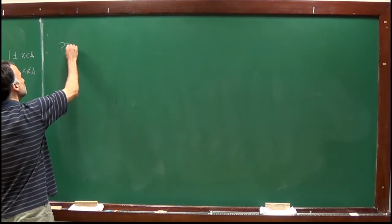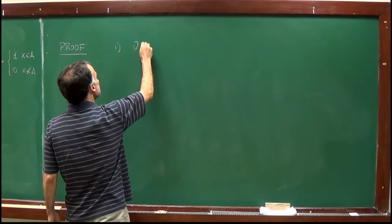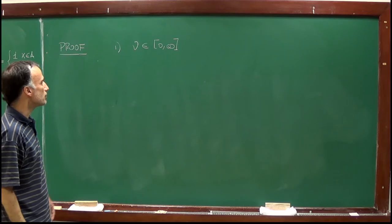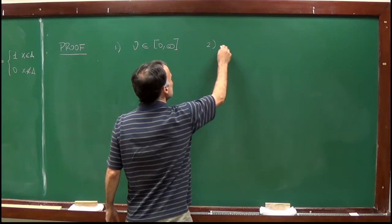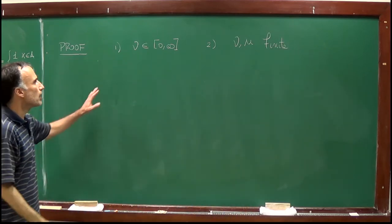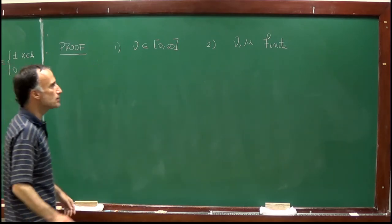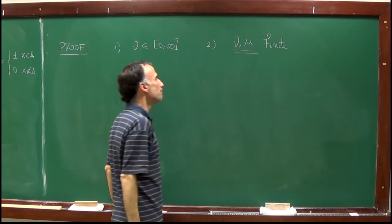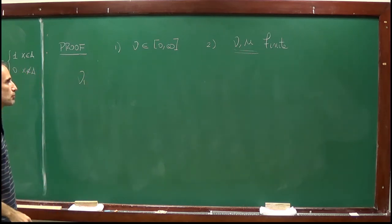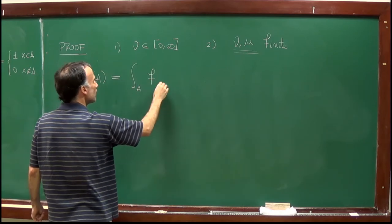Let me give an idea of the proof. I will first assume that nu takes values between 0 and plus infinity, and that both mu and nu are finite. I want to define nu1 of A as the integral over A of f d mu. If nu is non-negative and nu equals nu1 plus nu2, then nu1 of A is less than or equal to nu of A for any A.